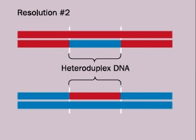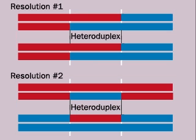The resolved chromosomes each contain regions of heteroduplex, but only resolution number 1 results in genetic recombination of the non-sister chromatids.